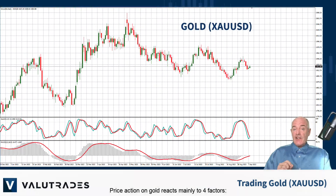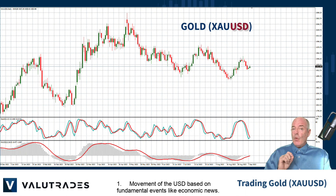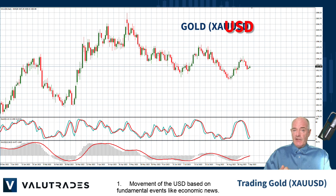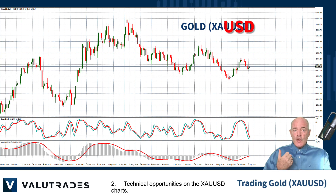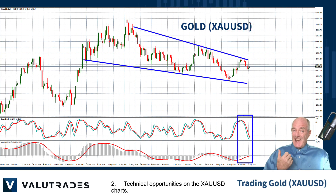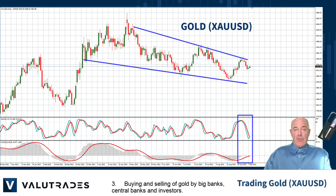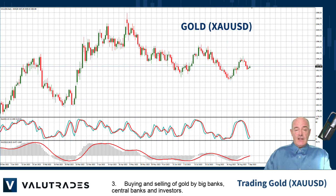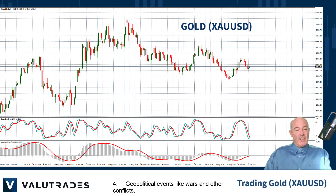Price action on gold reacts mainly to four factors. 1. Movement of the US dollar based on fundamental events like economic news. 2. Technical opportunities on the XAU USD charts. 3. Buying and selling of gold by big banks, central banks, and investors. 4. Geopolitical events like wars and other conflicts.